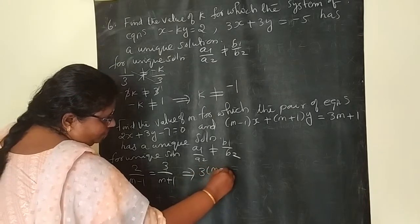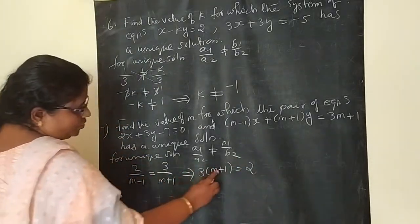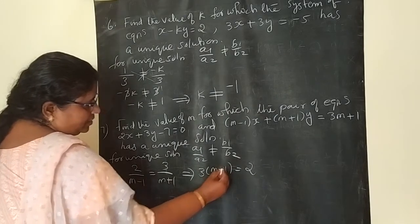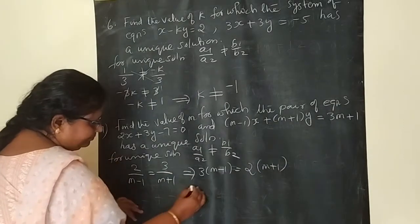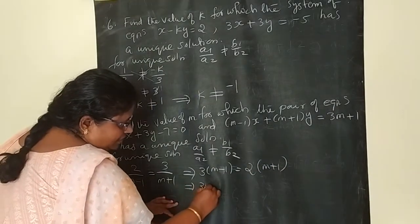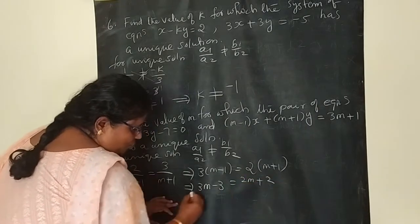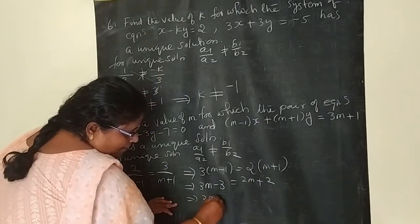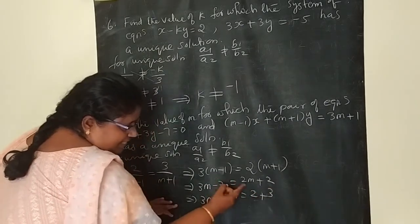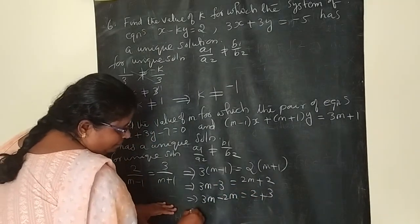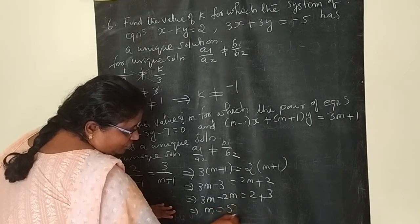Cross multiplying: 3 into M minus 1 equals 2 into M plus 1. This gives 3M minus 3 equals 2M plus 2. So 3M minus 2M equals 2 plus 3, which by simple equation solving gives M equals 5.